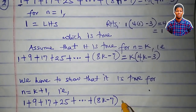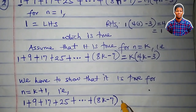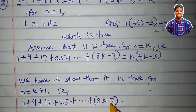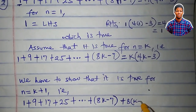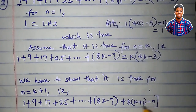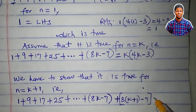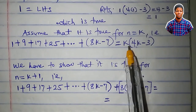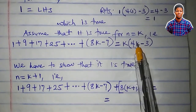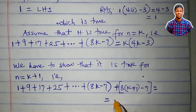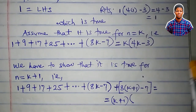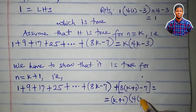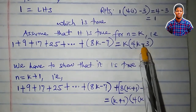I will determine the next term after 8k minus 7 by making this function a function of k plus 1. That is, plus 8 times k plus 1 minus 7. And which is equal to, in place of k I will put k plus 1 here and likewise. So I have k plus 1 in brackets, times 4 times k plus 1 minus 3.